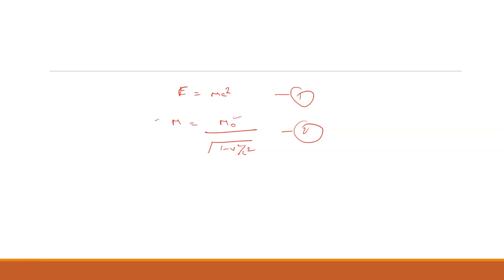Here m is the variable mass and m₀ is the rest mass when the object is not moving. Now put the value of m from equation two into equation one and square both sides. So E squared equals m₀ squared c⁴ divided by 1 minus v²/c².